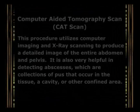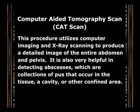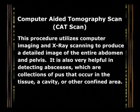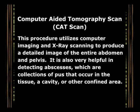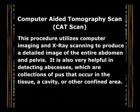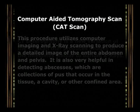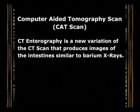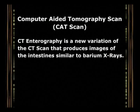Computer-aided tomography scan, also known as a CAT scan, utilizes computer imaging and x-ray scanning to produce a detailed image of the entire abdomen and pelvis. It is also very helpful in detecting abscesses, which are collections of pus that occur in the tissue, a cavity, or other confined area. CT enterography is a new variation of the CT scan that produces images of the intestines similar to barium x-rays.